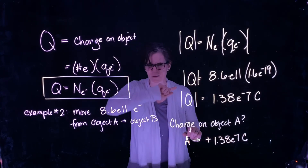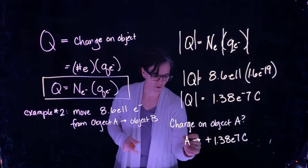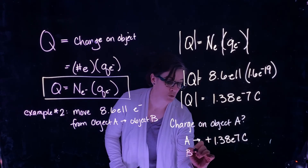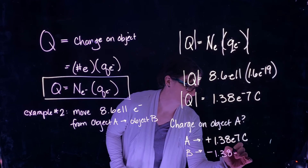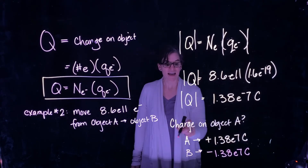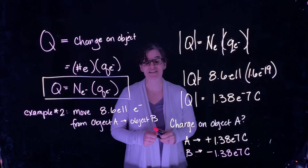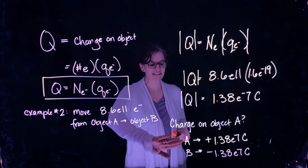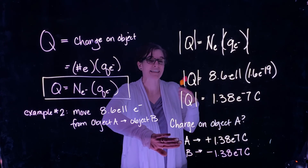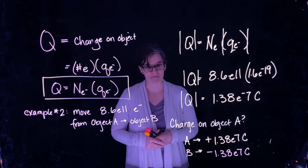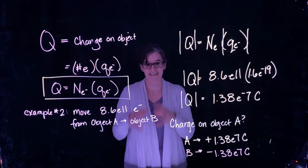What about object B? We've taken that fixed amount of electrons and placed them onto object B, so object B has more electrons than it did before — it will have a negative charge of 1.38 times 10 to the minus 7 coulombs. This gets back to the conservation of charge idea: what I've taken off of A and put onto B means object A is left with the same charge magnitude as object B has gained. Two different ways to utilize this relationship when thinking about the quantized nature of charge.